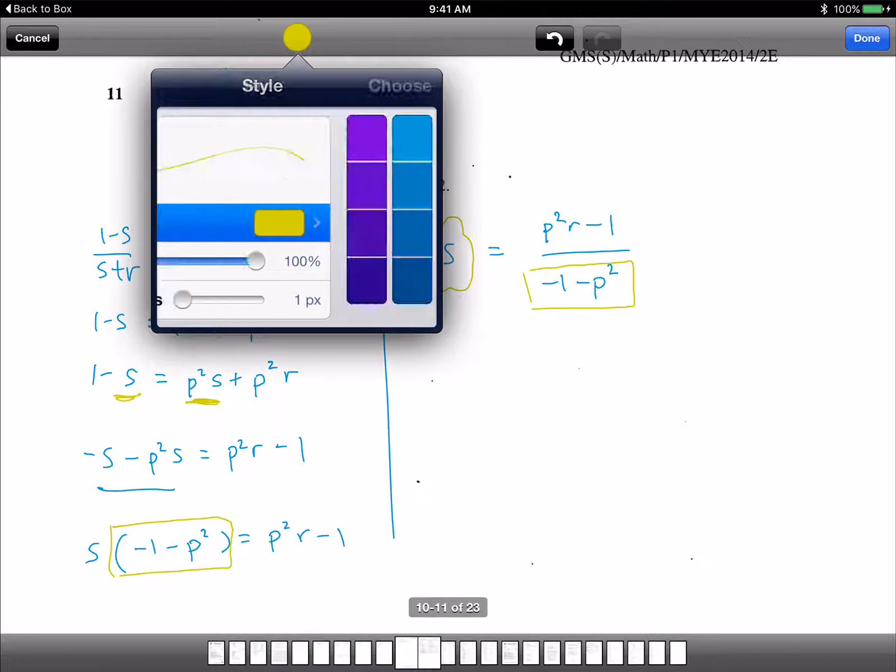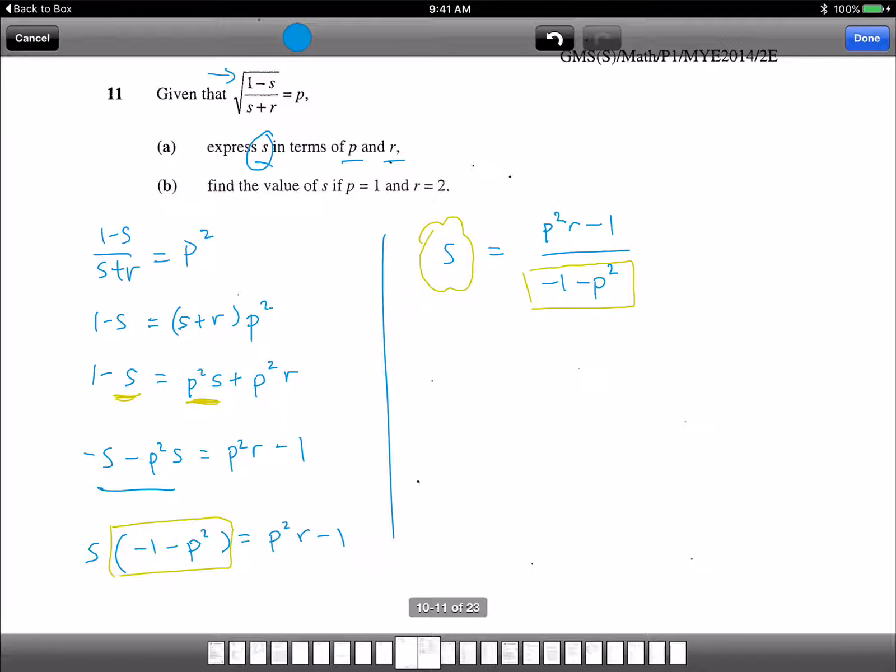Next part. For the next part, they ask you to find the value of S if P equals 1 and R equals 2. So for part B, substitute P equals 1, R equals 2. So S equals to 1 squared times 2 minus 1 over minus 1 minus 1 squared.